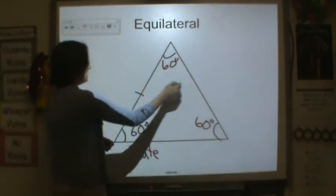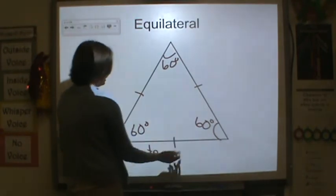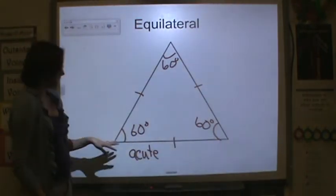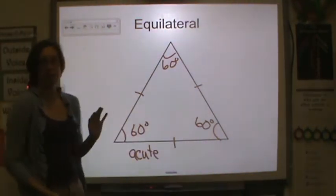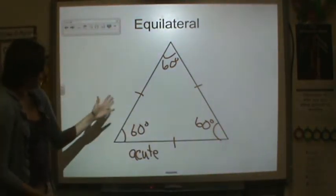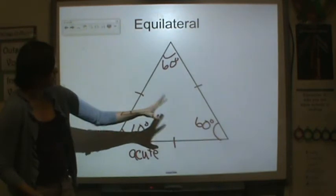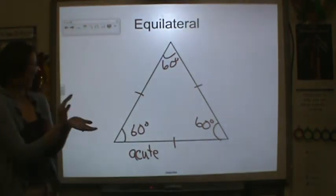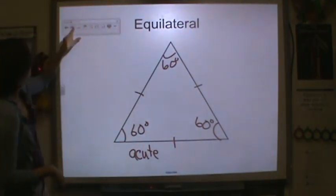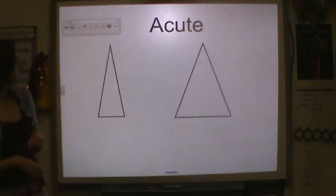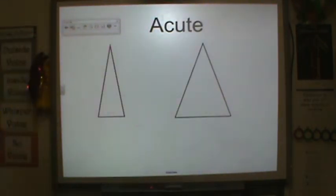So we have three equal side lengths and three equal angles, which are 60 degrees each.